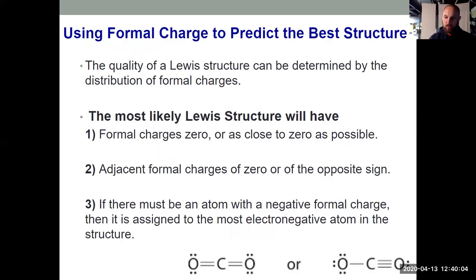So that ties into a situation where you're running into multiple possible Lewis structures. The quality of a Lewis structure can be determined by how our formal charges are distributed. So the most likely or the best Lewis structure will have all formal charges of zero or as close to zero as possible.